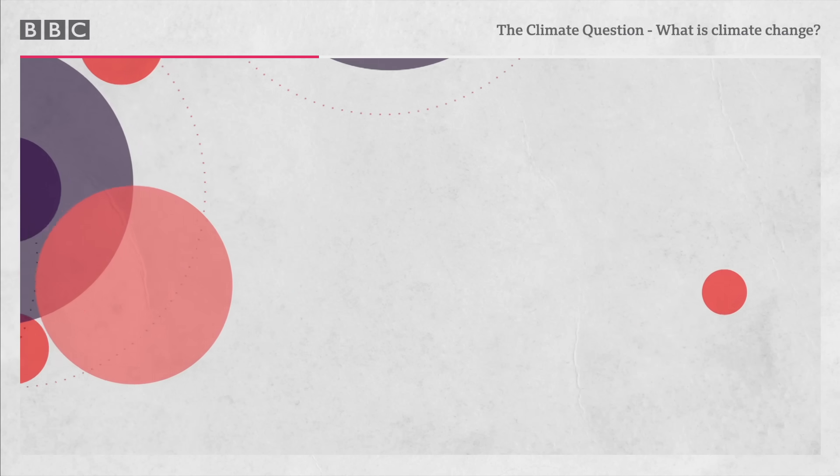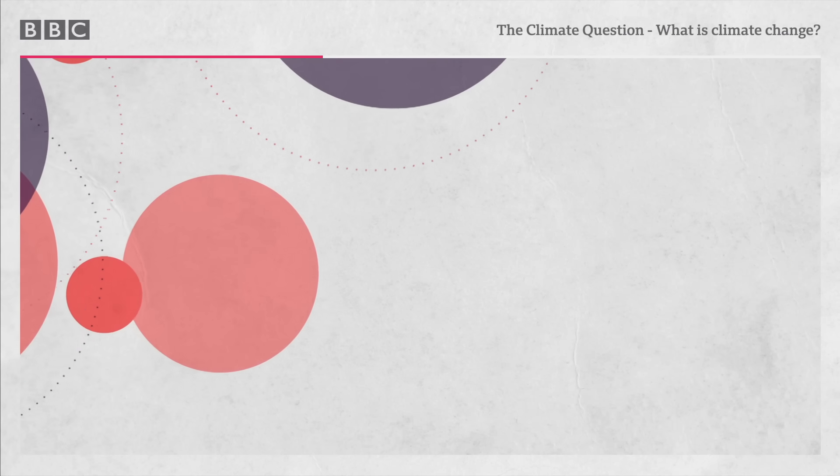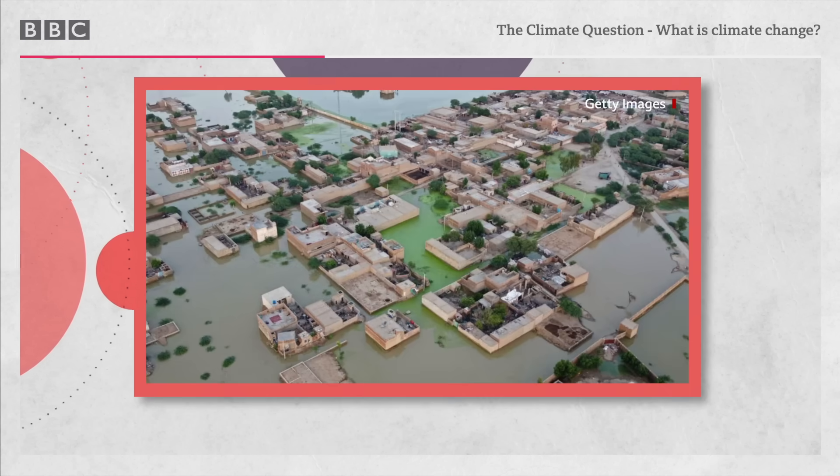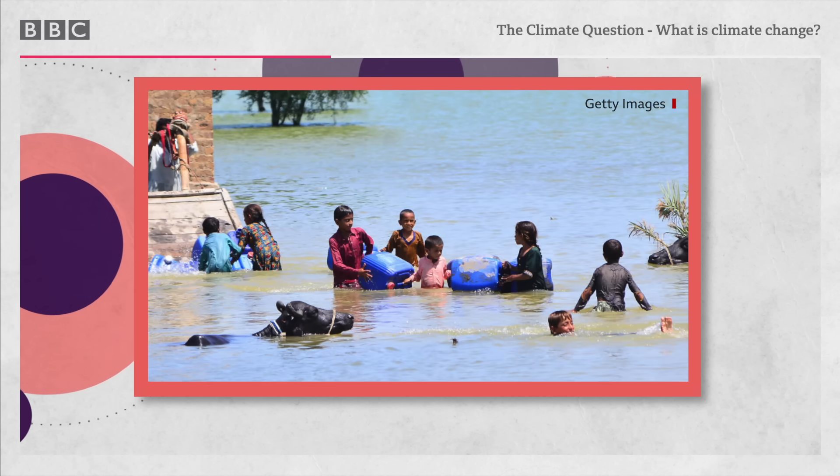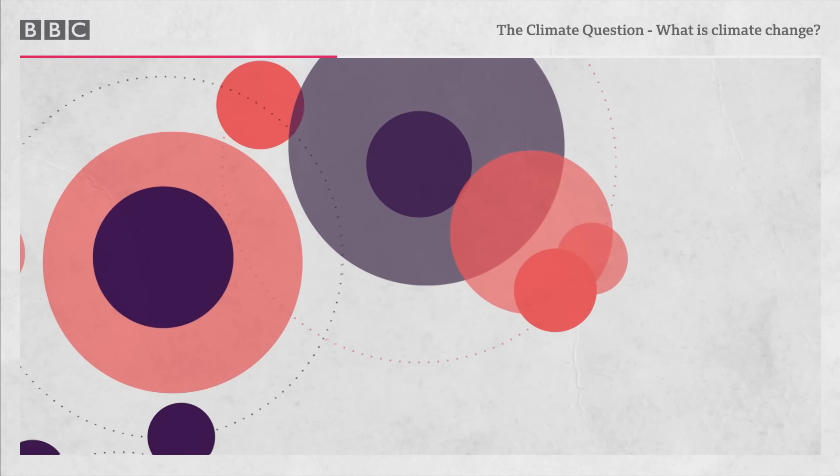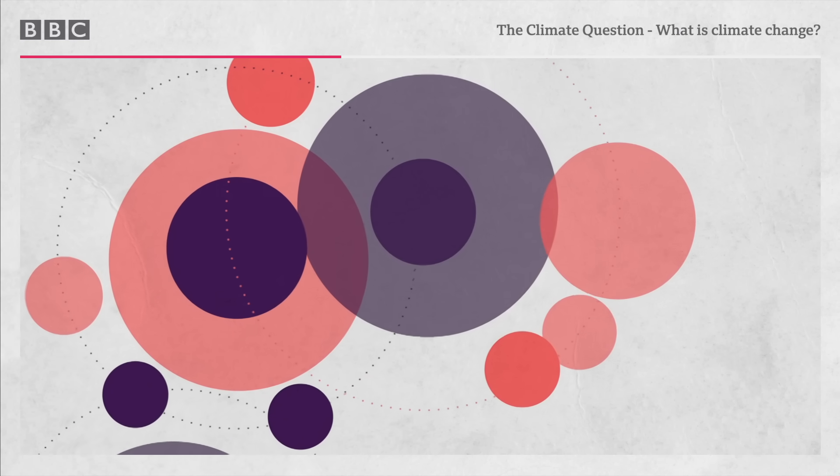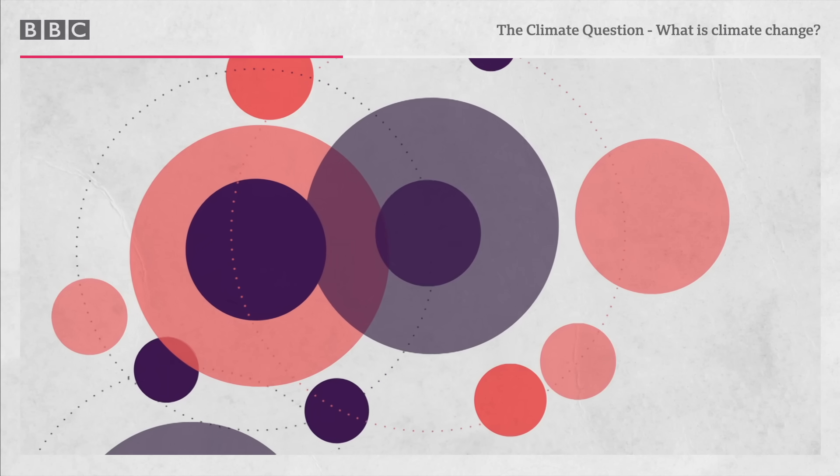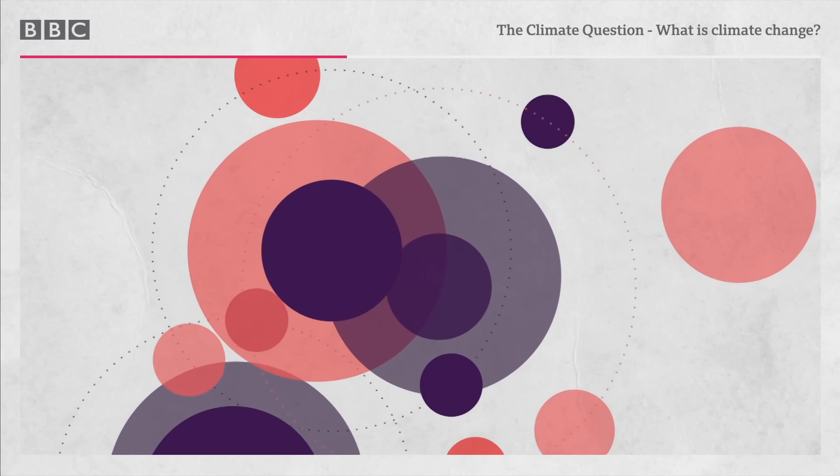On the climate question, we have seen firsthand the effects that these impacts can have. We go around the world to speak with people on the front line of climate change. Floods have destroyed much of my country, Pakistan. The waters have killed some 1500 people and displaced millions. So sea levels rising, there's actually a couple of different factors driven by climate change that cause that. One very simple one that people don't often appreciate is that as the oceans warm, warm water takes up more space than cold water. And so you get this thing called thermal expansion, where the warming of the oceans literally causes the water to take up more space and the sea levels to rise because of that.